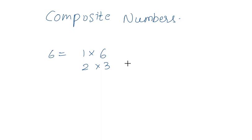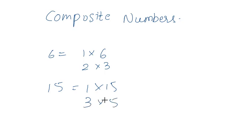So 6 has four factors. Let us take another example: 15 can be written as 1 times 15 and 3 times 5, so it also has four factors. These types of numbers are called composite numbers. Thank you.